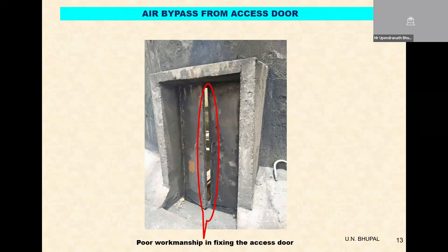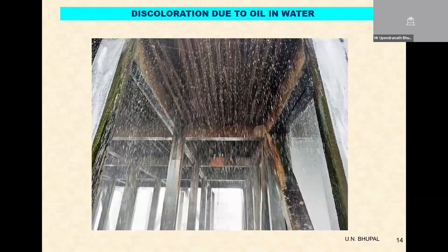The door you are seeing is basically the access door to the fan. In most cases these days they are asking for FRP doors, but there is a legacy problem where metal doors are preferred because they are heavy and less prone to maintenance. But you can see the initial installation itself is so bad that it is not closing properly, so there is a lot of air bypass into the fan stack — a percentage of air instead of passing through the air inlet is passing from below the fan because this is the least path of resistance. This is from the same project where you see discoloration of the fill because of oil ingress into the cooling tower.